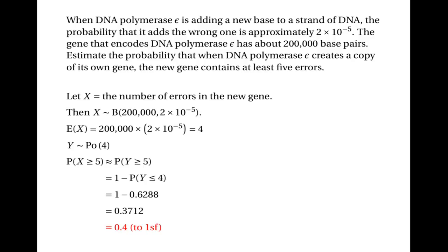This shows there's a very significant probability that when DNA polymerase epsilon creates a copy of its own gene it will introduce many errors. This should be worrying: if every time DNA is replicated many errors are introduced into the genes that create the proteins that do the copying, very soon the whole thing could go disastrously wrong because the new DNA wouldn't create the right proteins and the whole copying process would grind to a halt. Obviously the problem can't be as bad as that, because otherwise life couldn't continue. What happens is that after the DNA polymerase enzymes have created new DNA, other enzymes come along and do proofreading — they find the errors and in the vast, vast majority of cases manage to fix them.